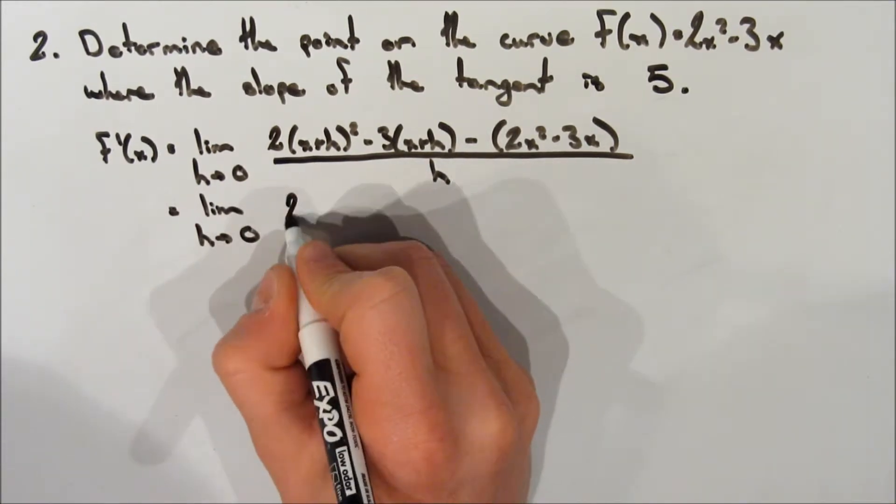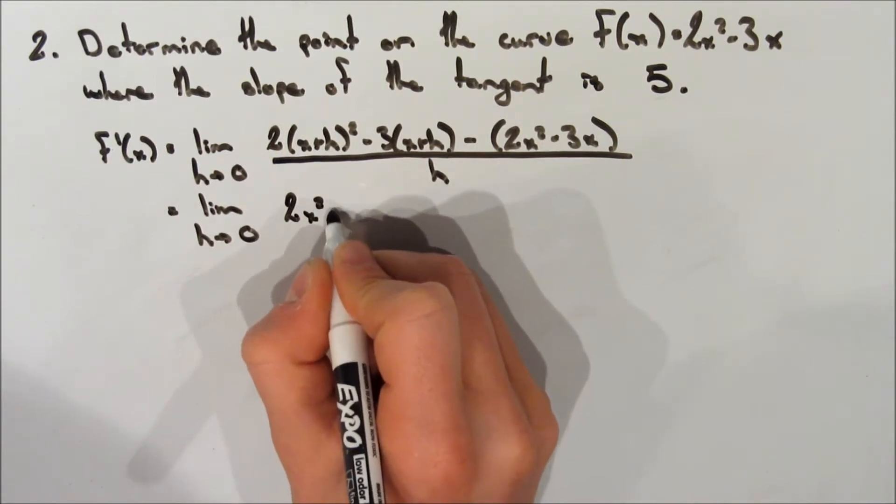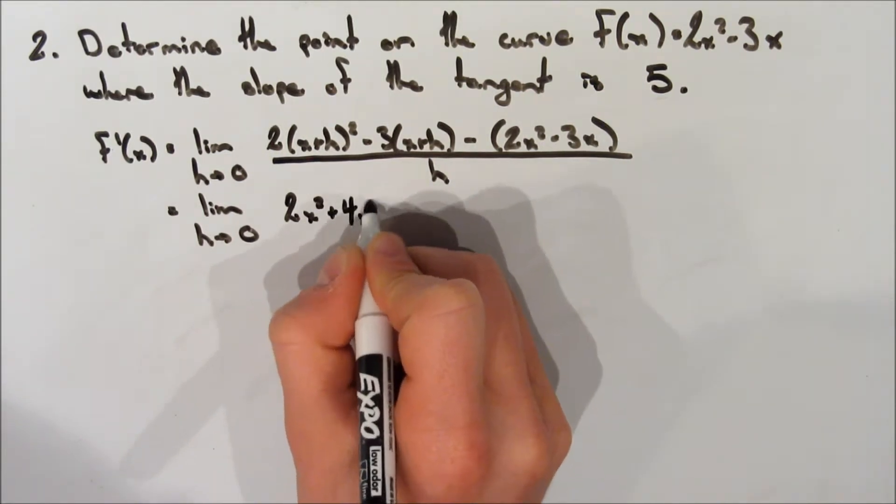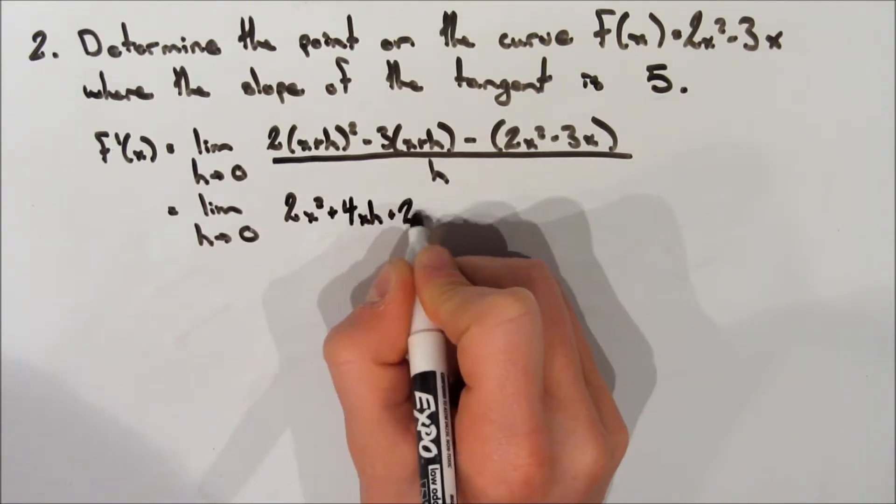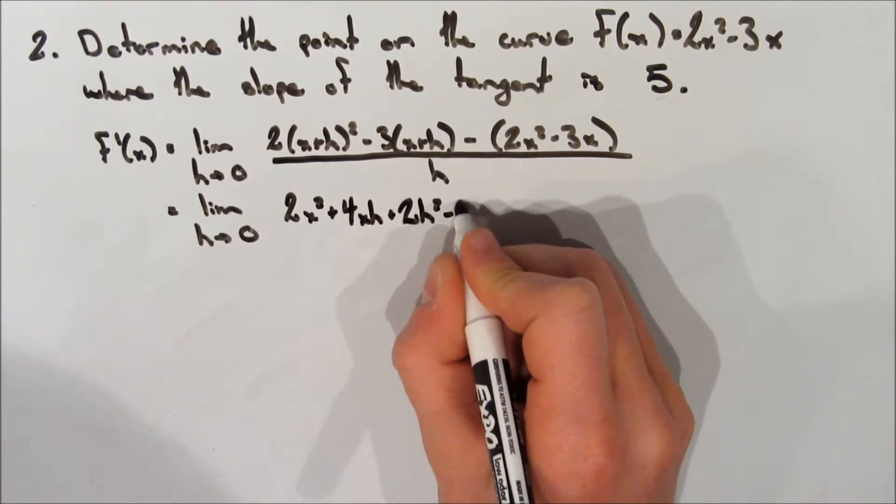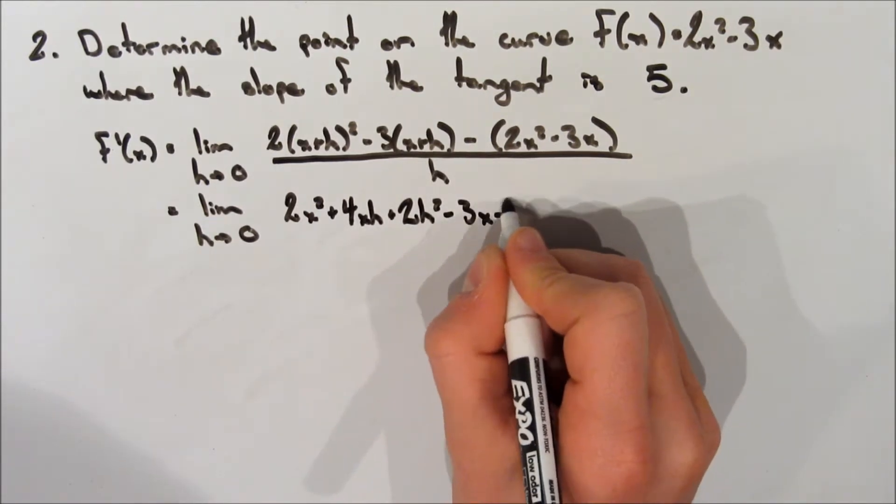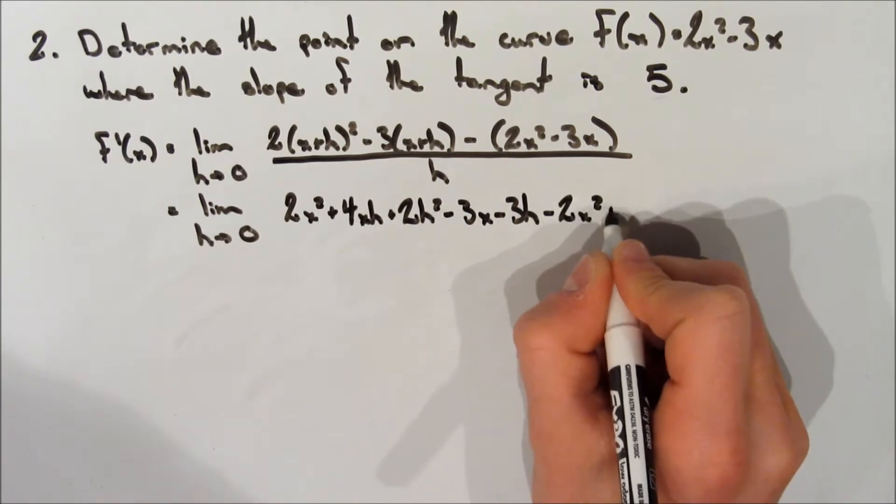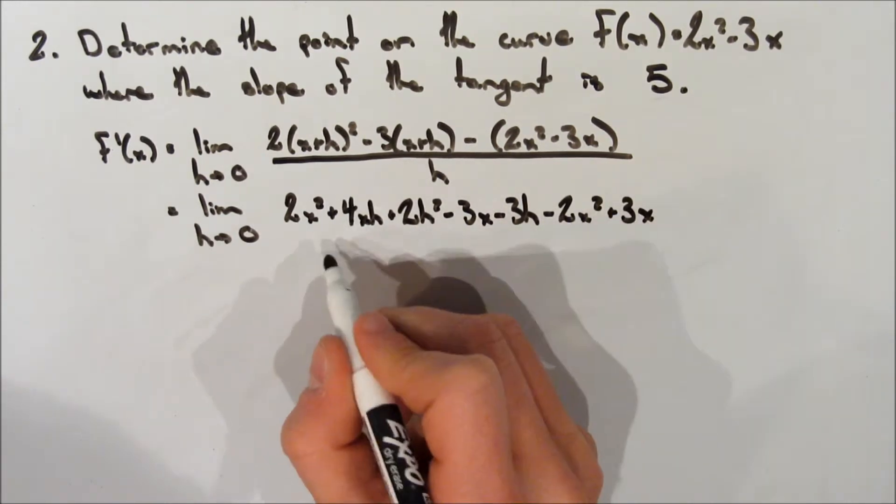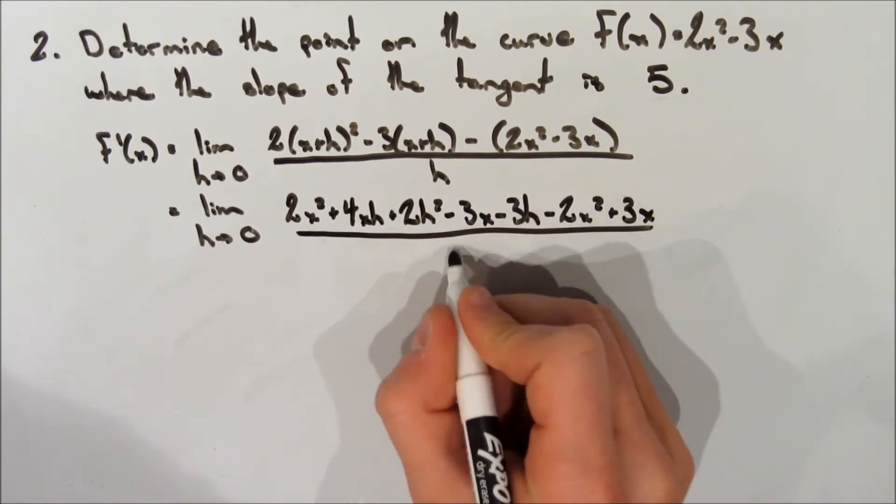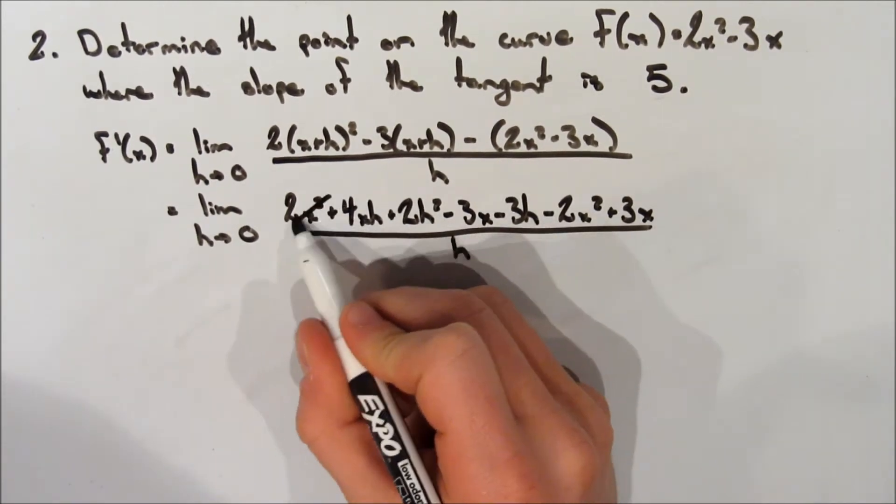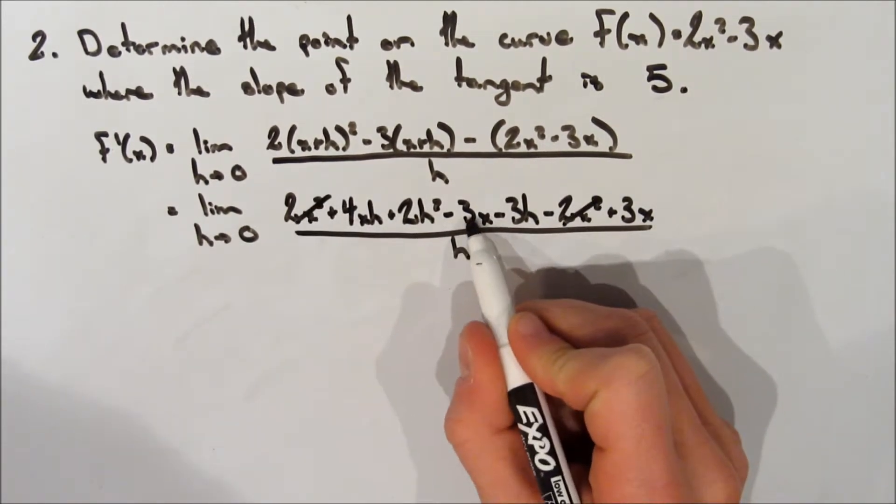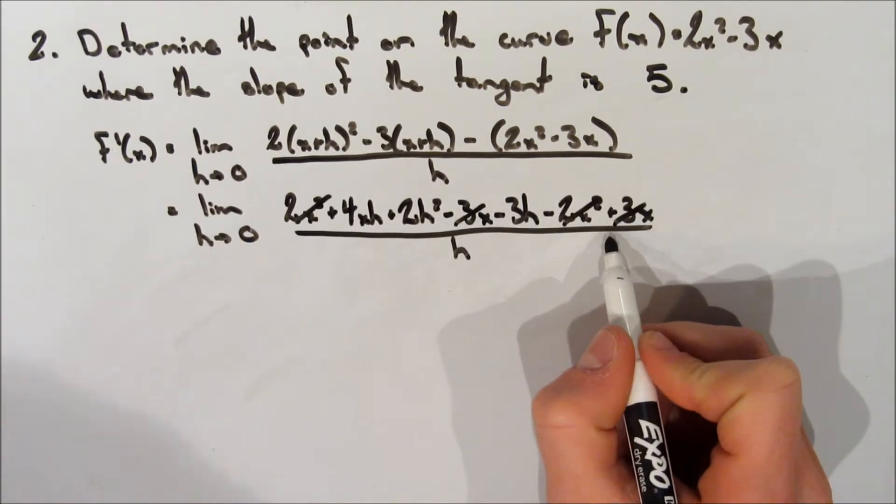So now in the next line, still taking the limit. So it's 2x squared plus 4xh plus 2h squared minus 3x minus 3h minus 2x squared plus 3x. And all of this is still over h. So now as you can see, we have some common terms. So we're going to cancel out the 2x squareds and the 3x's.